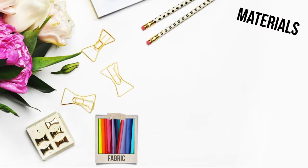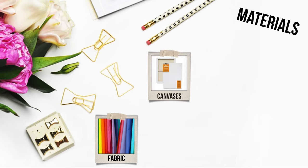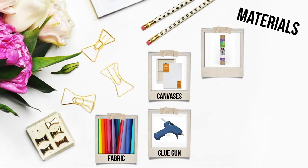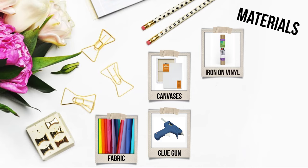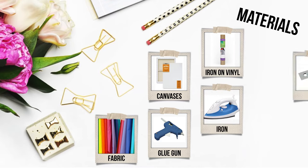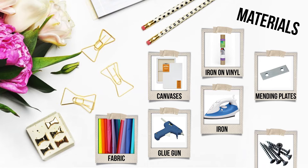So for materials, you're going to need fabric in any color or pattern of your choice. Some canvases, mine were 16 by 20, a glue gun, some iron-on vinyl, this is the Cricut brand. You're also going to need an iron and some mending plates and screws you can get from the hardware store.